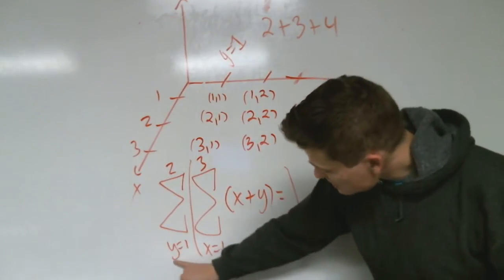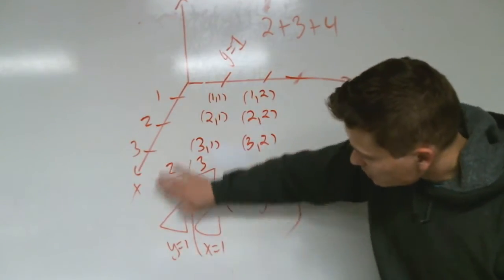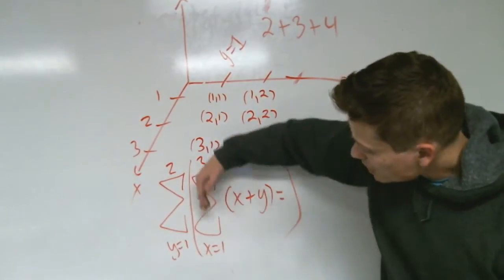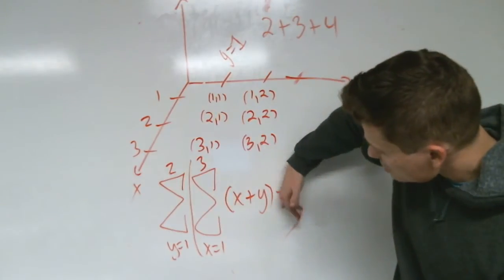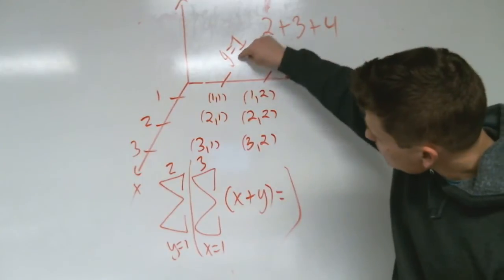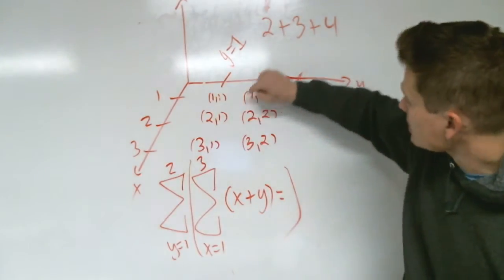In other words, you first set this value, don't worry about the two, you set that value, you perform the inner summation with the y fixed at 1 across the x's and that gives you the sum.